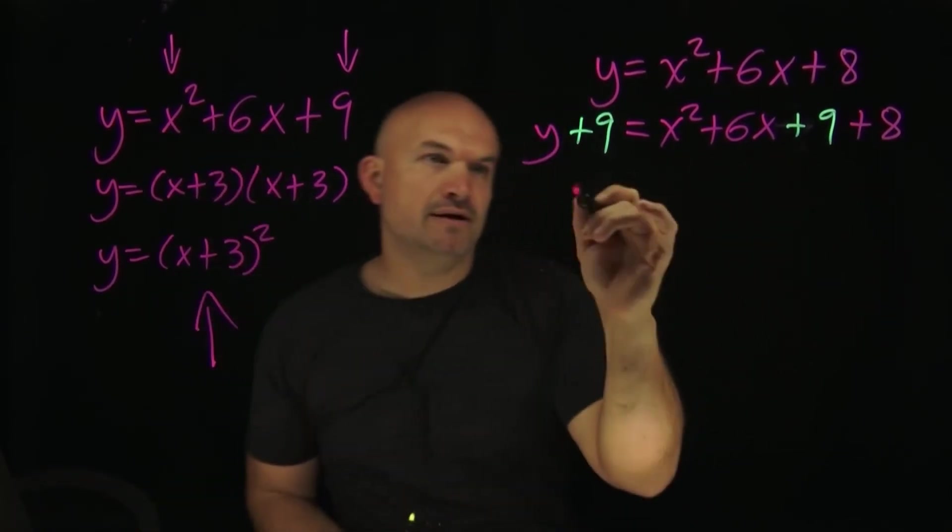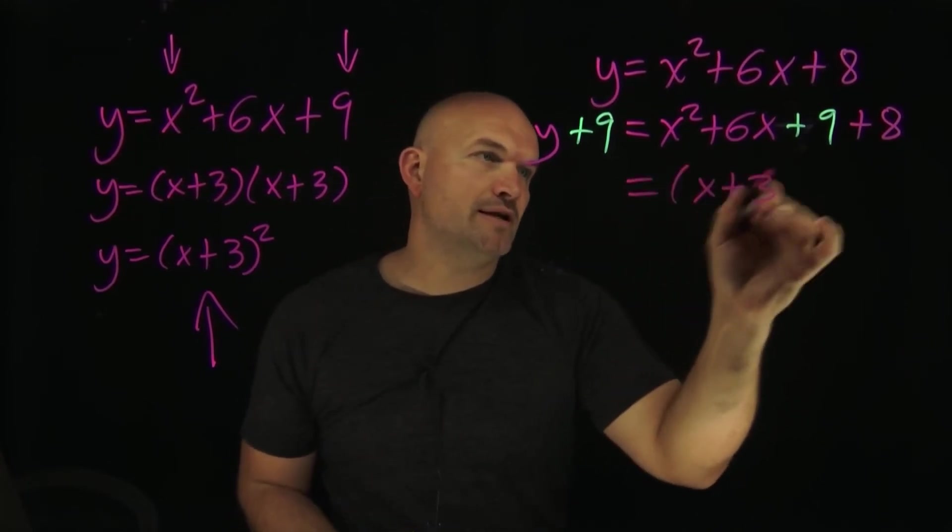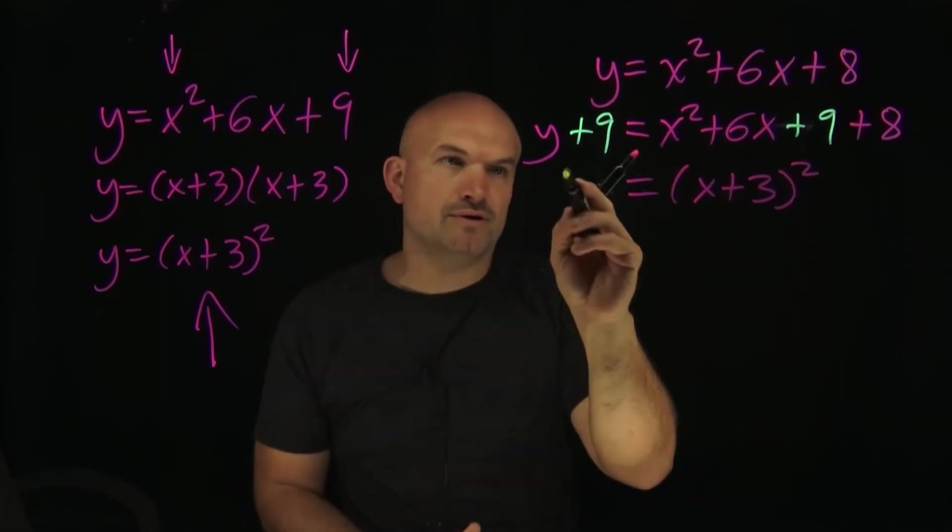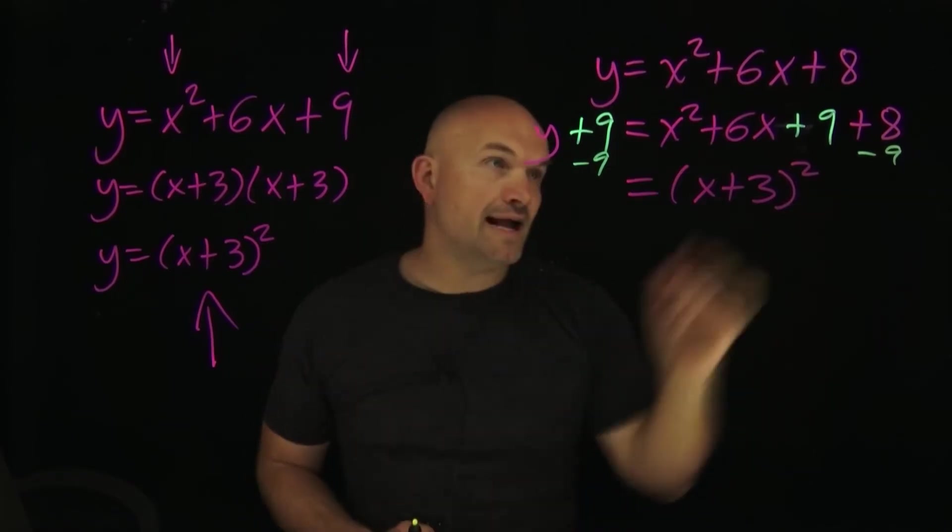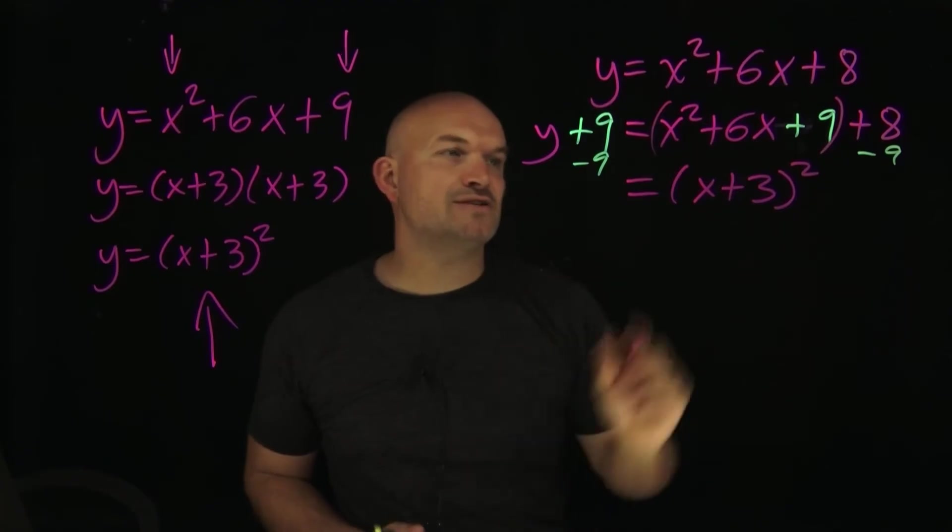So now I know that this factors down to this binomial squared. Now I can have an (x + 3)² . Now, if I want to solve for y, what are you going to do? Well, you're going to subtract a 9 on both sides, and therefore 8 minus 9 is going to be a minus 1.